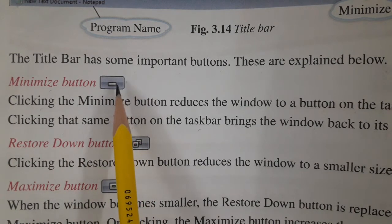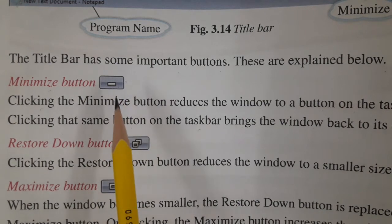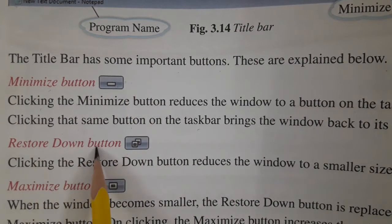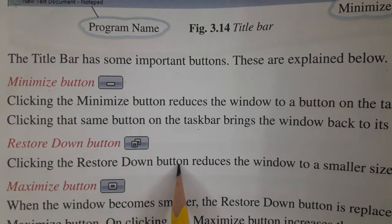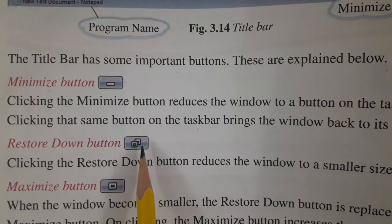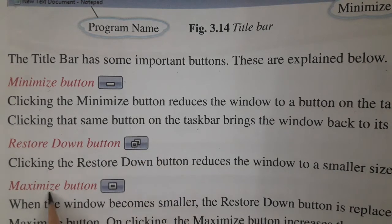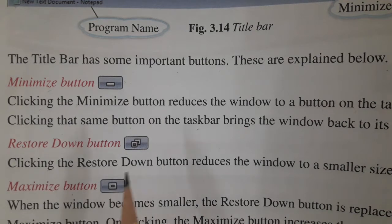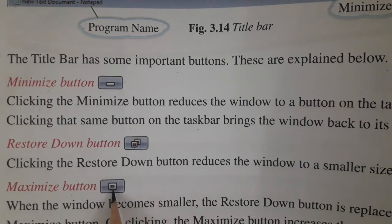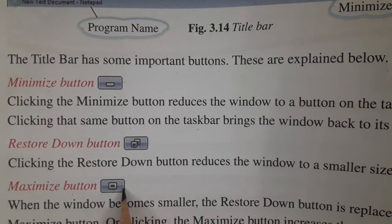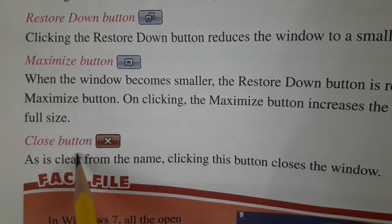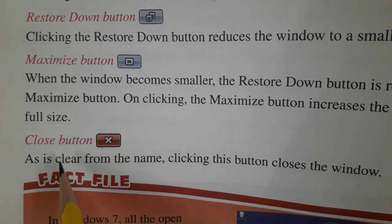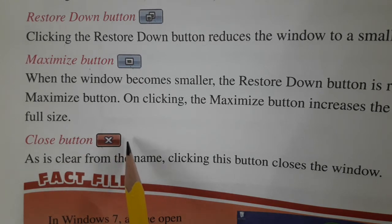The restore down button reduces the window to a small size. The maximize button, when clicked, increases the window back to its full size. The close button, when clicked, closes your window.